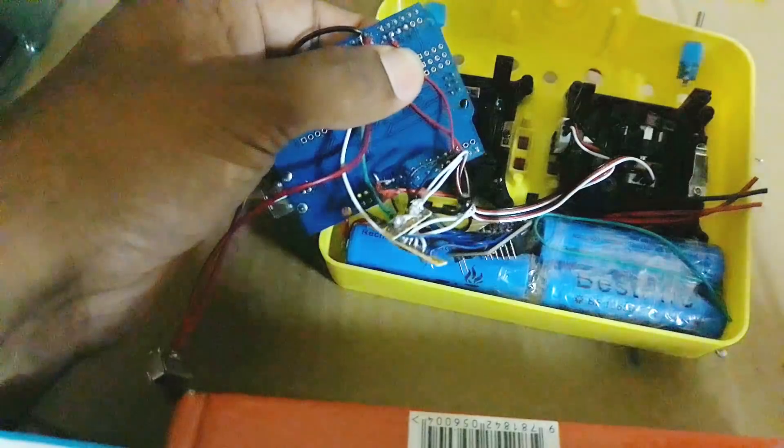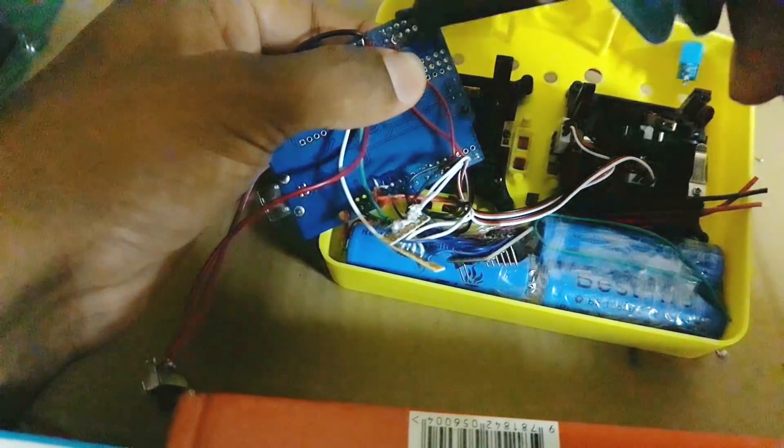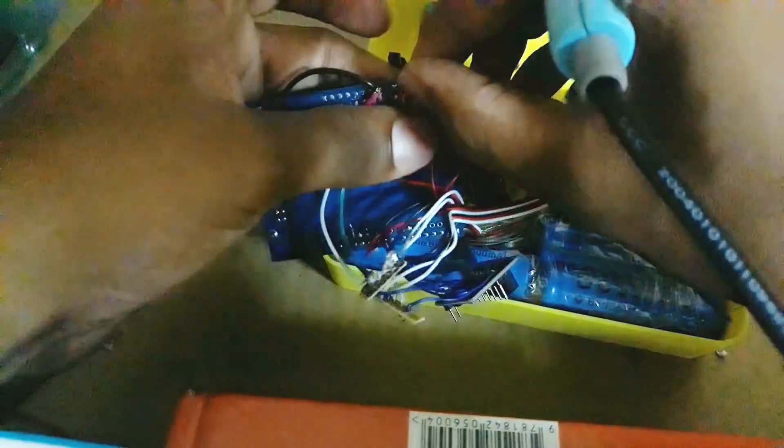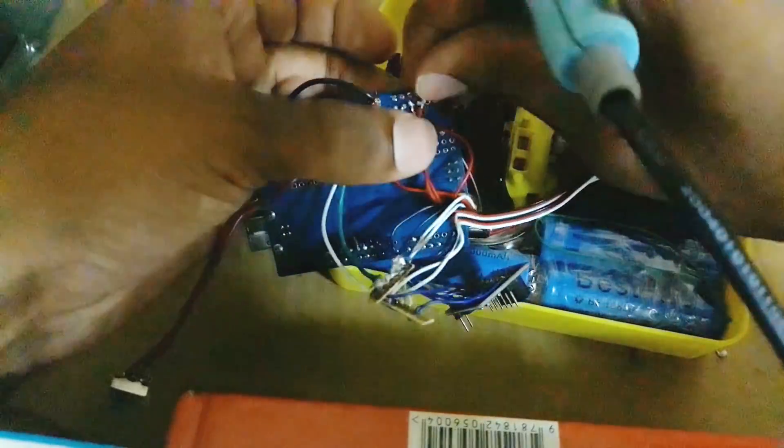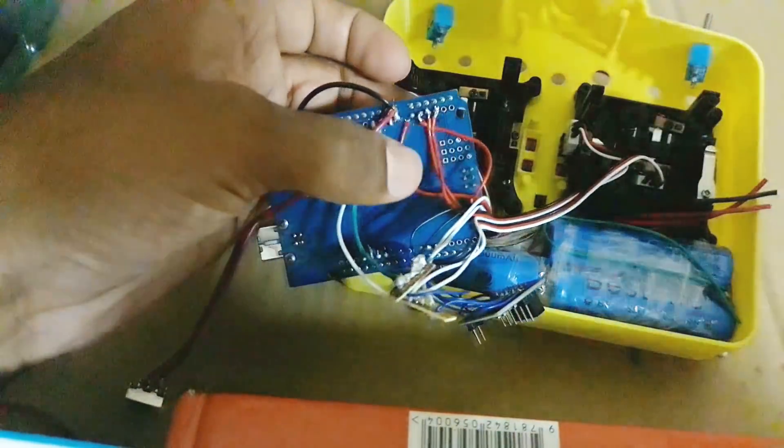Now I am connecting the analog pins of the joystick to the analog pins of the Arduino. I am using the A0, A1, A2, A3 pins.